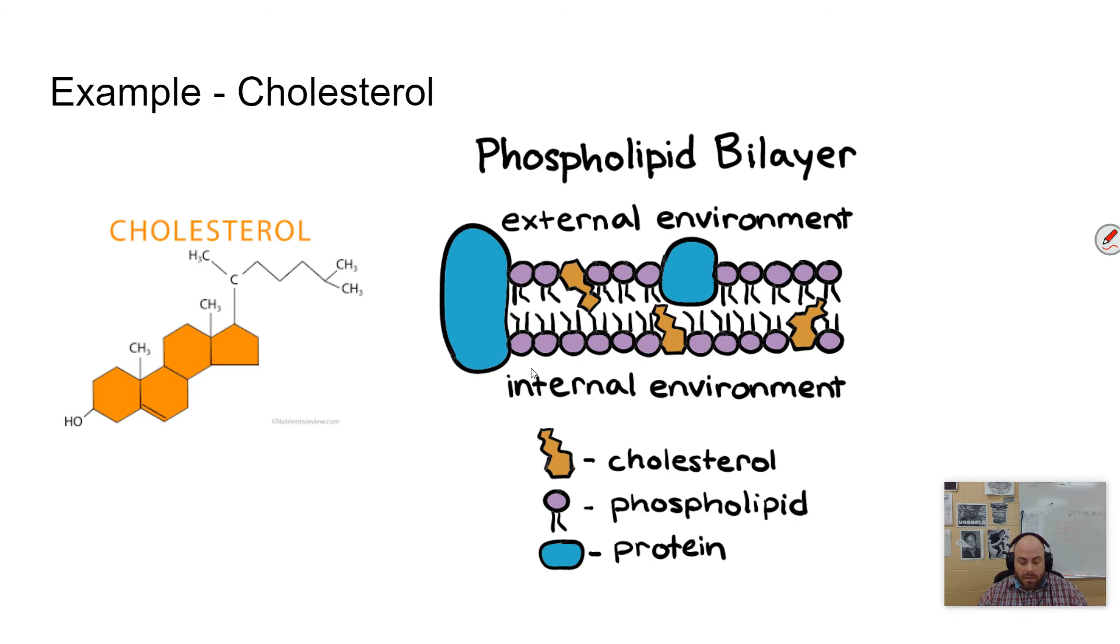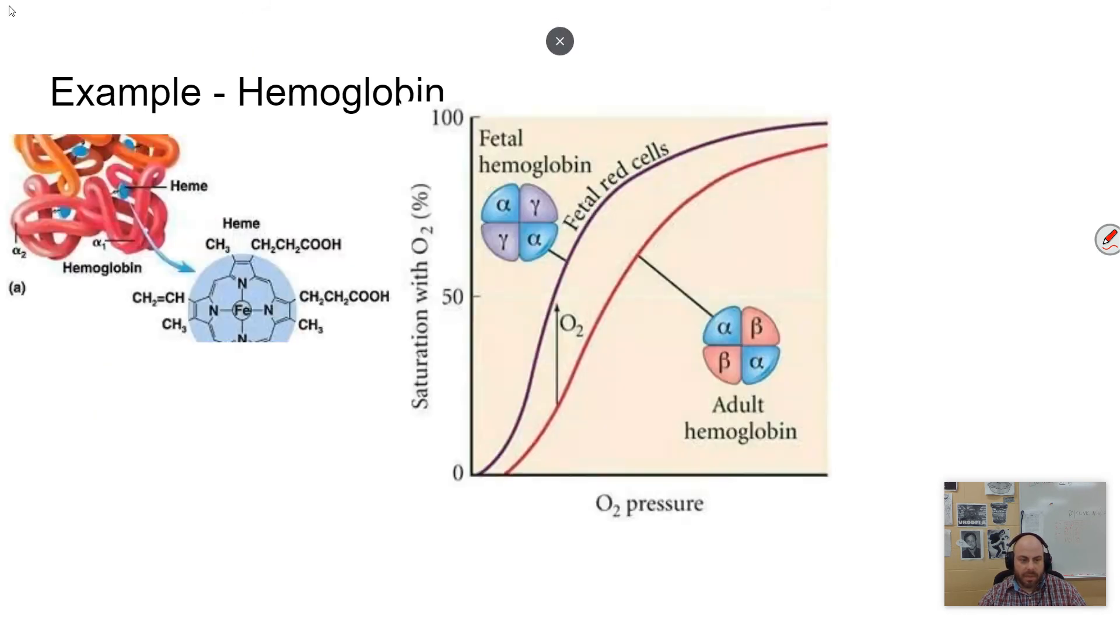Unlike plant cells, animal cells don't have a cell wall. And so water can actually be dangerous to animal cells. And so this cholesterol can increase or decrease the amount of water diffusion that happens in cell because cholesterol, as you can see, is a steroid. And so it is a lipid, which is non-polar, and it doesn't allow water to diffuse across the membrane. Some organisms are going to want more water, and some are going to want less, depending on the environment that they live in.